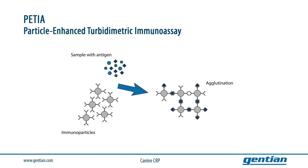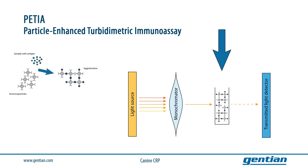Importantly, the degree of this cross-linking correlates with the concentration of the CRP antigen in the sample. This reaction takes place within the cuvette of the analyzer and the degree of agglutination is measured by passing light through the sample. A light source emits a fixed amount of light and the monochromator filters the light beam so only one narrow wavelength passes through the sample. The cross-linked complexes reflect and absorb some portion of light, and the transmitted light is measured by a detector; based on the fraction of incoming light and light passing through the sample, the concentration of CRP can be calculated.